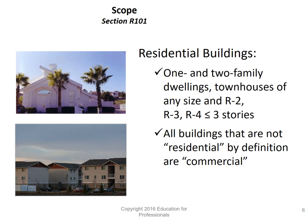All buildings not classified as residential are defined as commercial. Multifamily homes such as condos, even though they contain individual residences, are mostly considered commercial buildings because they exceed the two-family requirement. Anything exceeding three stories is treated as a commercial building.